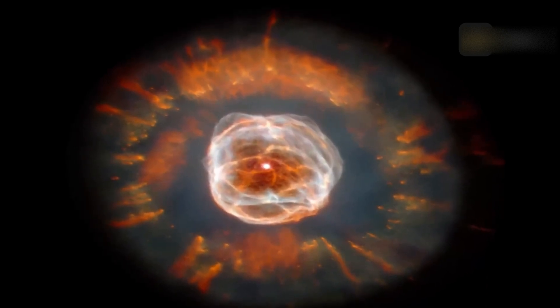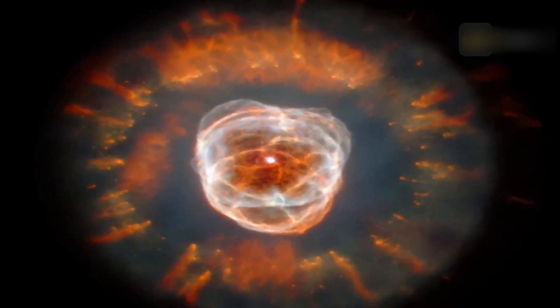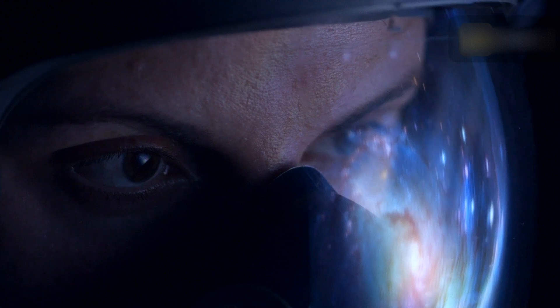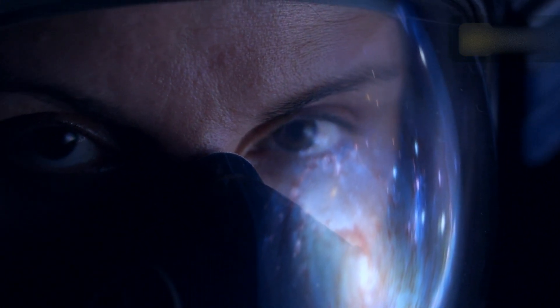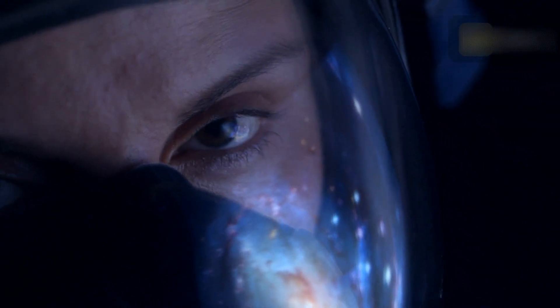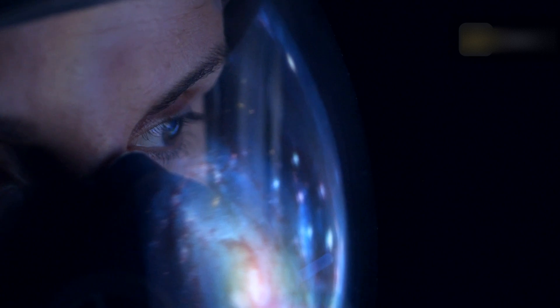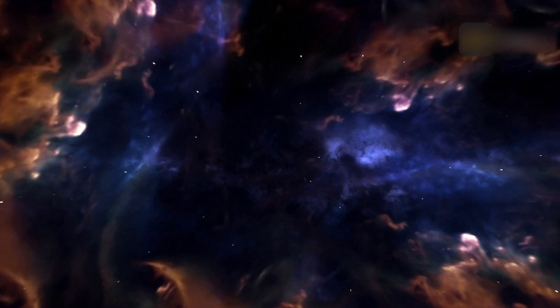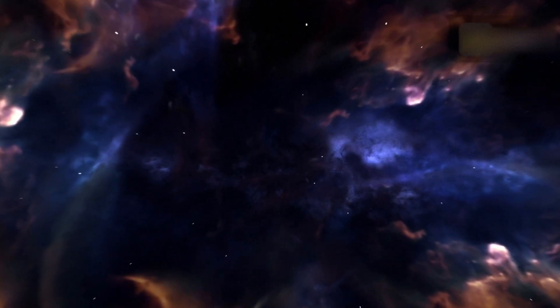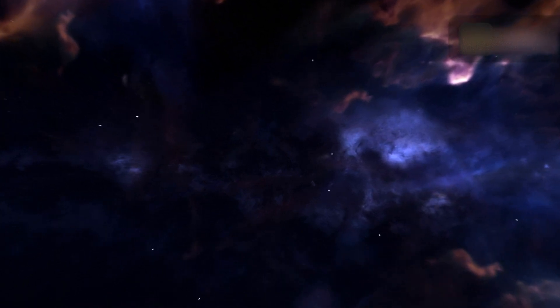Assuming the universe is isotropic, the distance to the edge of the observable universe is roughly the same in every direction. That is, the observable universe is a spherical region centered on the observer. Every location in the universe has its own observable universe, which may or may not overlap with the one centered on Earth. The co-moving distance from Earth to the edge of the observable universe is about 14.6 gigaparsecs in any direction. The observable universe is thus a sphere with a diameter of about 28.5 gigaparsecs.